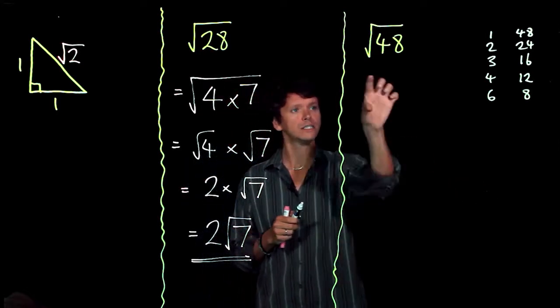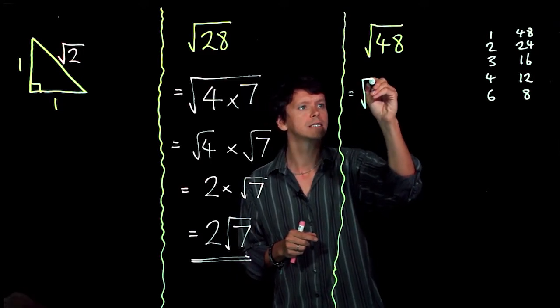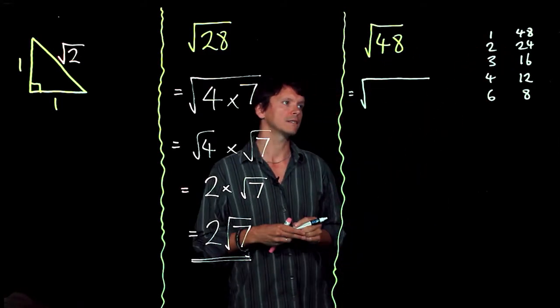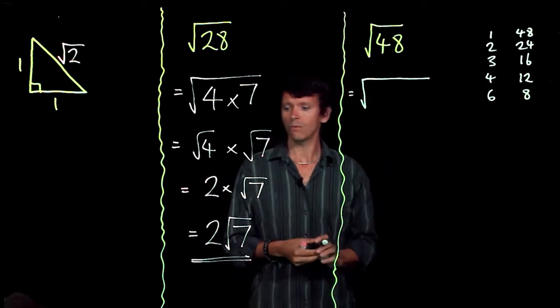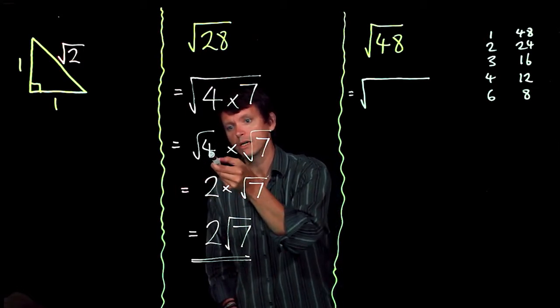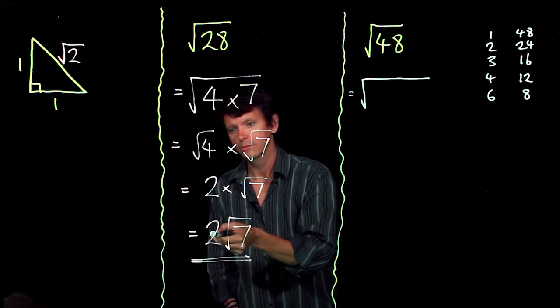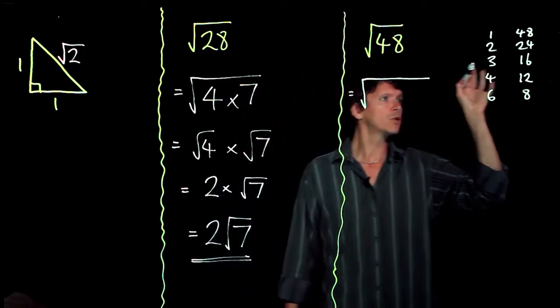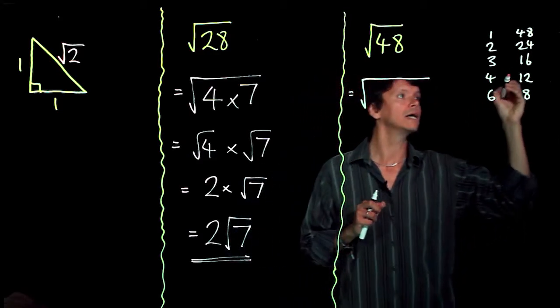And what we're looking for is a pair of factors that we can split this 48 up into, so that when we rewrite this inside here we split 48 into two factors. Well, we could pick any of these, but if you see what happened down here, because we had picked a number which was a square number, 4, it actually tidied up really nicely at the end because the square root of 4 is an integer, 2. So if we can find square numbers in here we know it's going to tidy up nicely at the end.